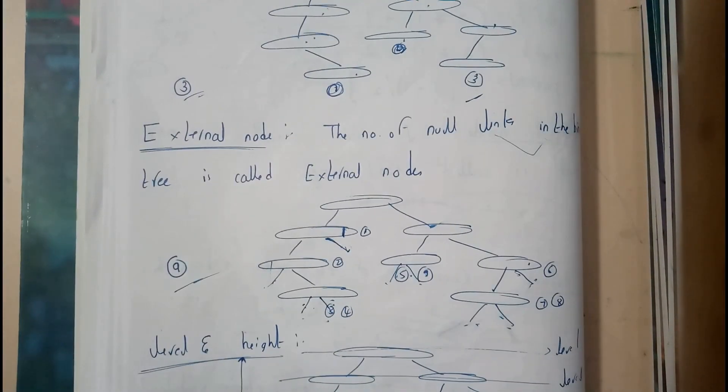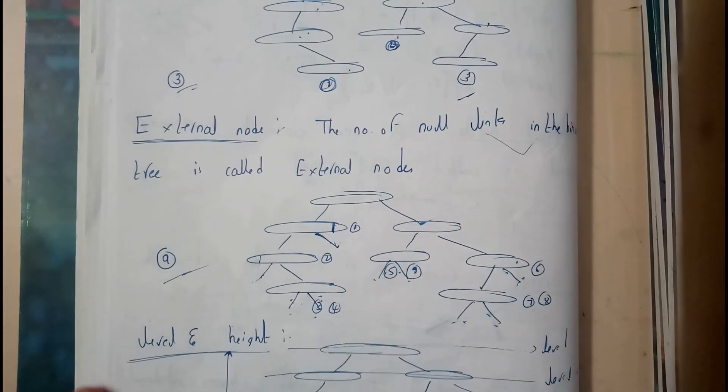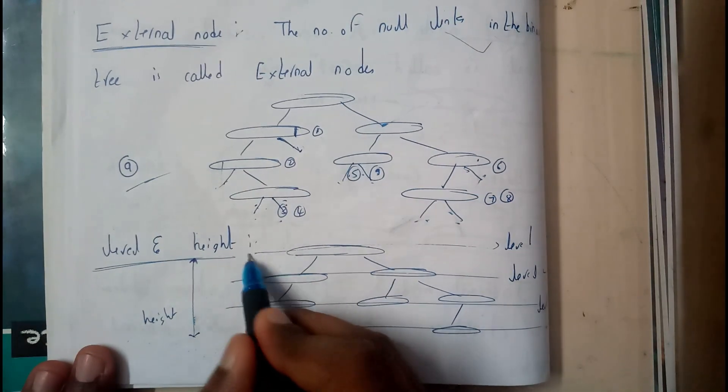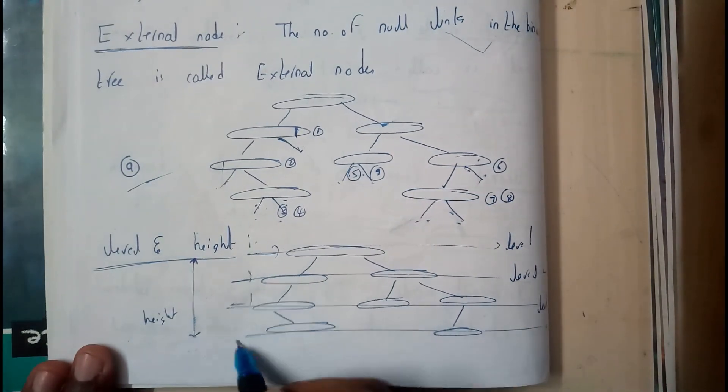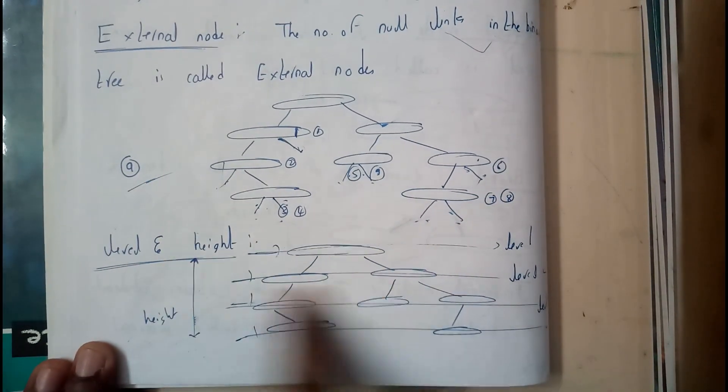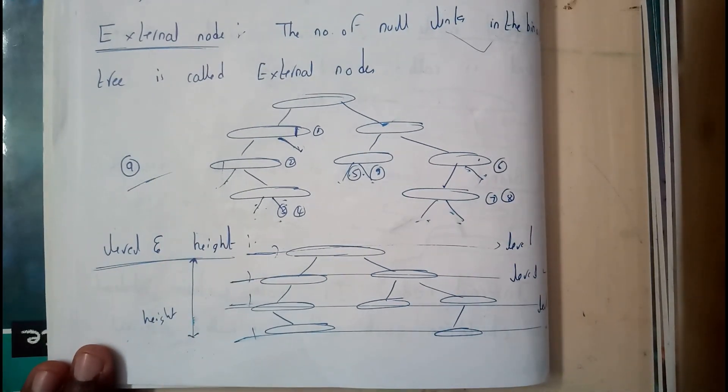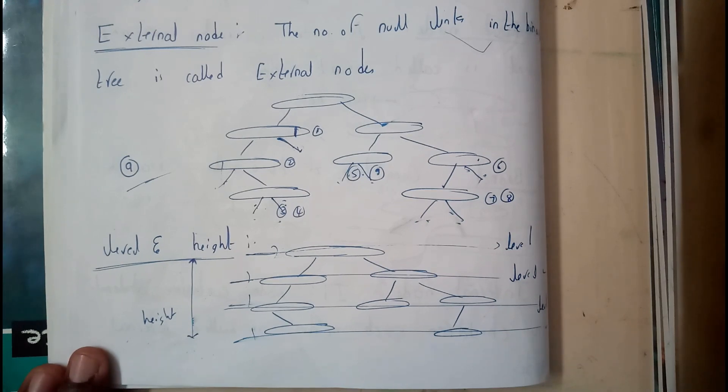So now further moving on, let's go through level and height. We will be calling these as level one, level two, level three, level four like that. The x-axis will be called as level and y-axis will be called as height. So now I hope everyone is now clear with all the terminology that we have discussed up to now.